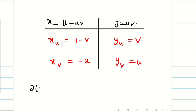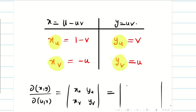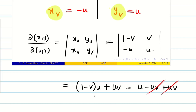Now we compute the Jacobian ∂(x,y)/∂(u,v). Copy the data into the determinant: x_u, x_v on the first row and y_u, y_v on the second row — that is (1-v), (-u), v, u. Expanding: (1-v)(u) - (-u)(v) = u - uv + uv. The uv terms cancel, giving a final answer of u.